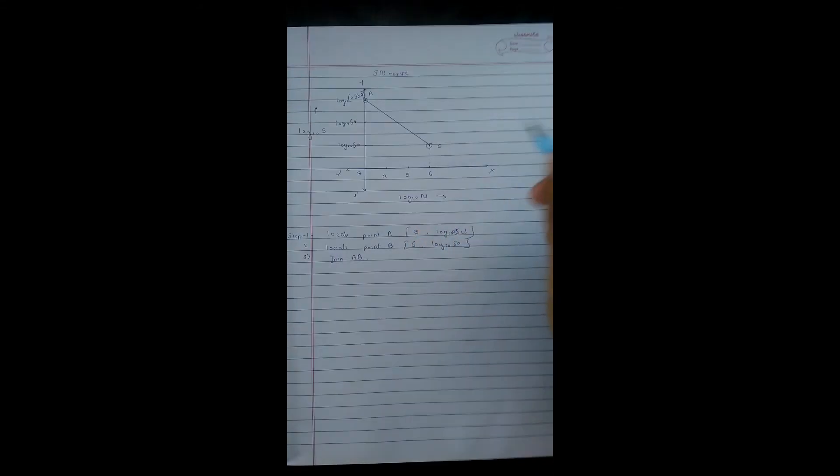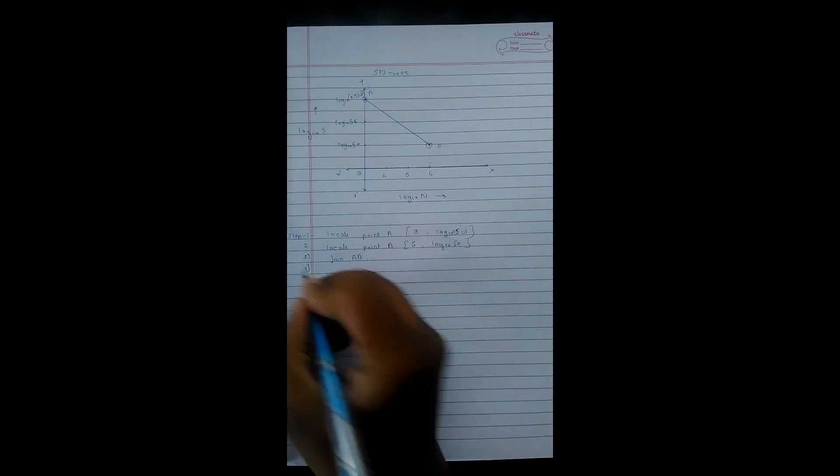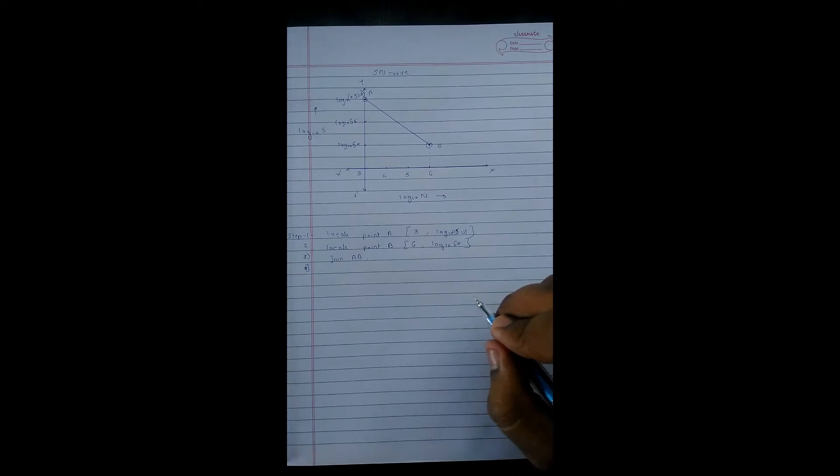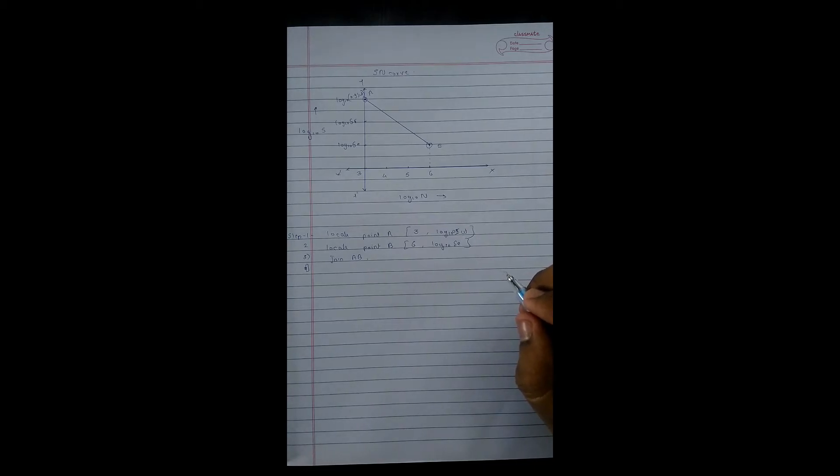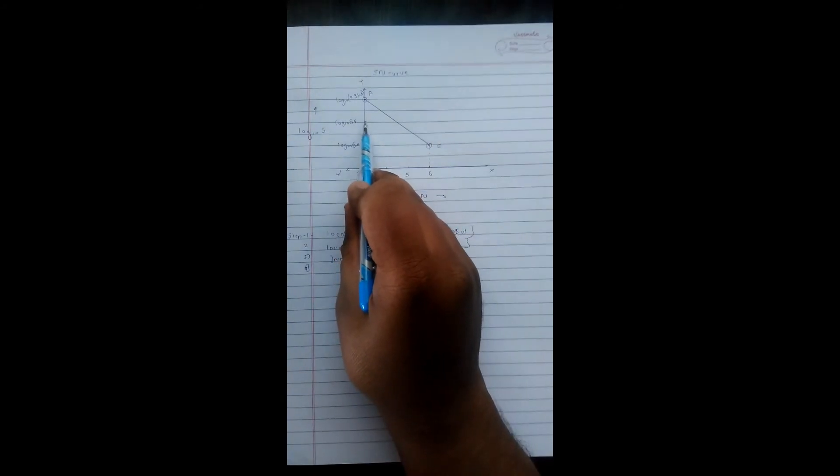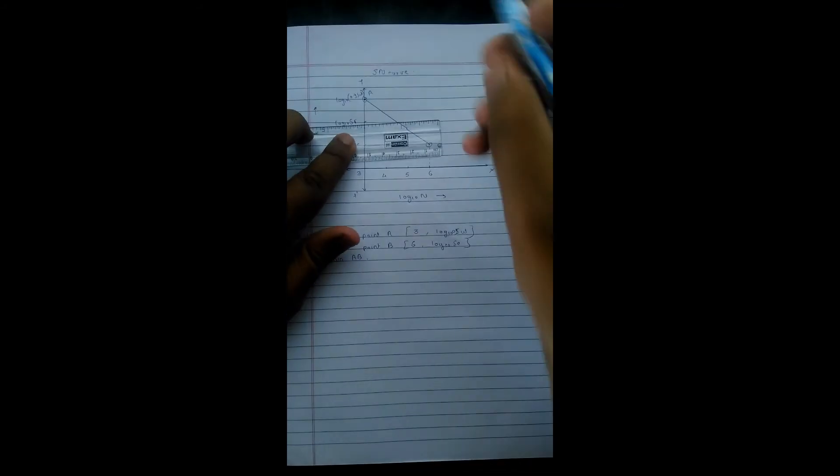Now we have got this line, we have to move for the fourth step. Our fourth step is locate the point Sf, that is fatigue strength at point E, which means we have to draw the parallel line to the Se to B from Sf with the same inclination.